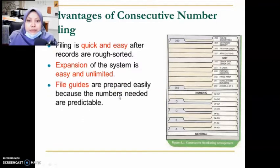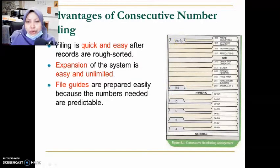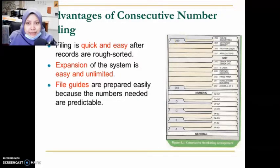File guides are prepared easily because the numbers needed are predictable. For example, our current file guides are at 250 and 260, so we already know the next one will be 270 — we can prepare it in advance.